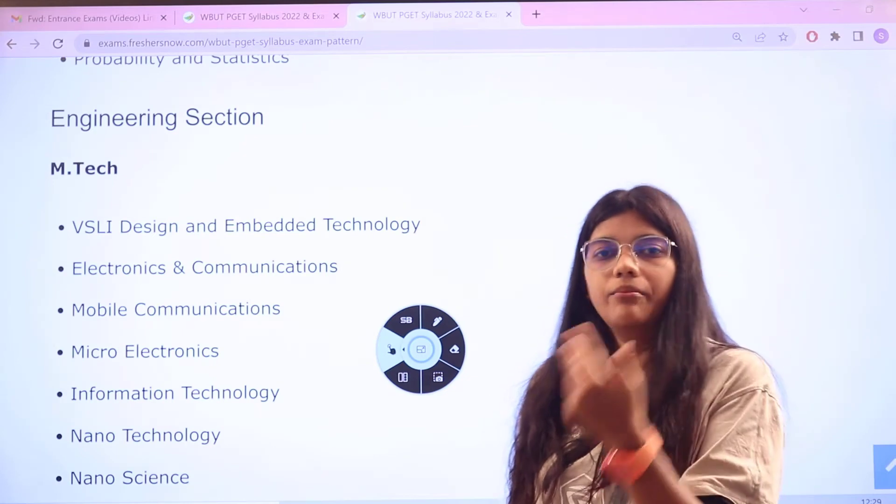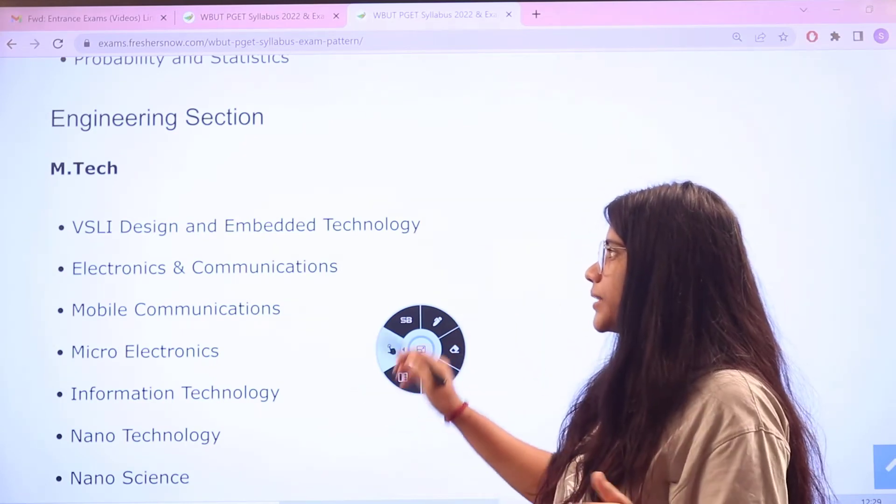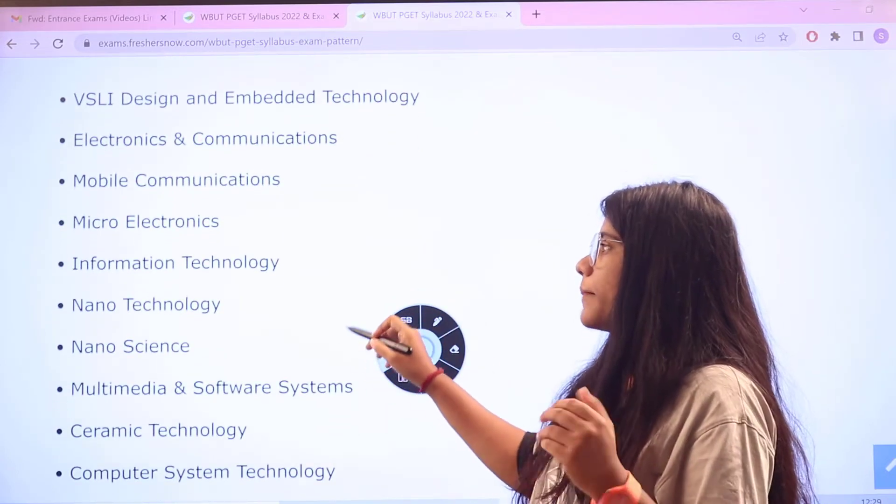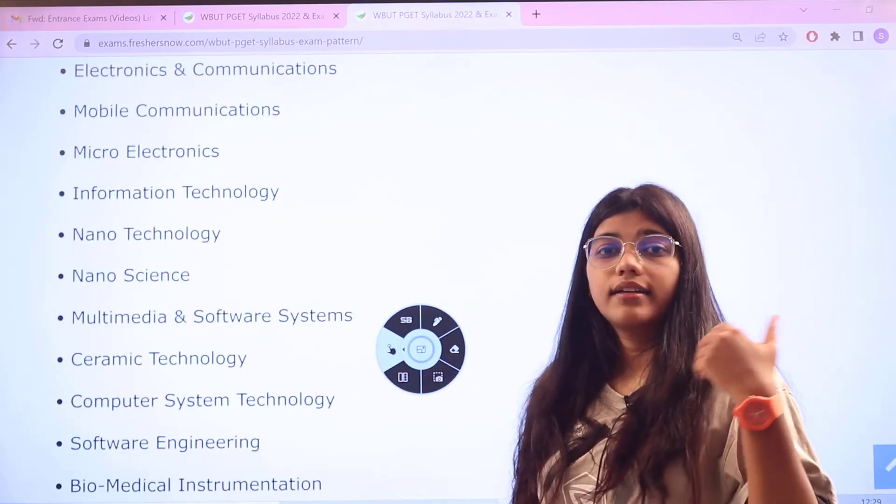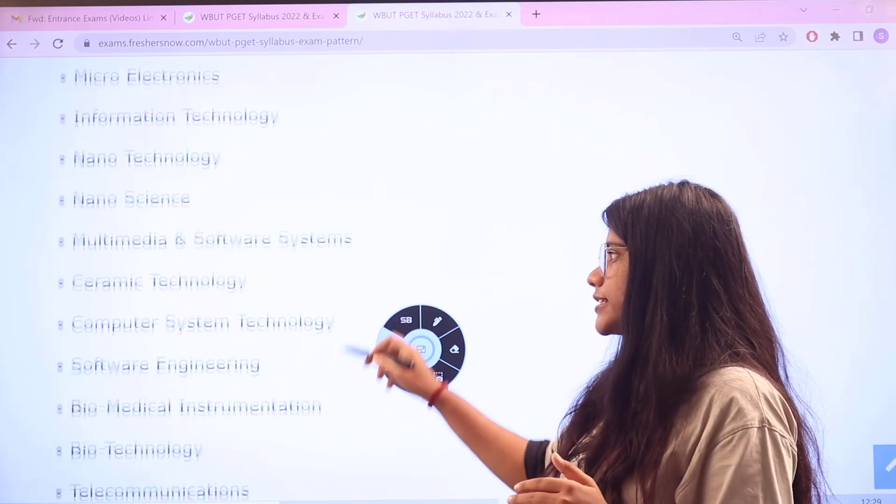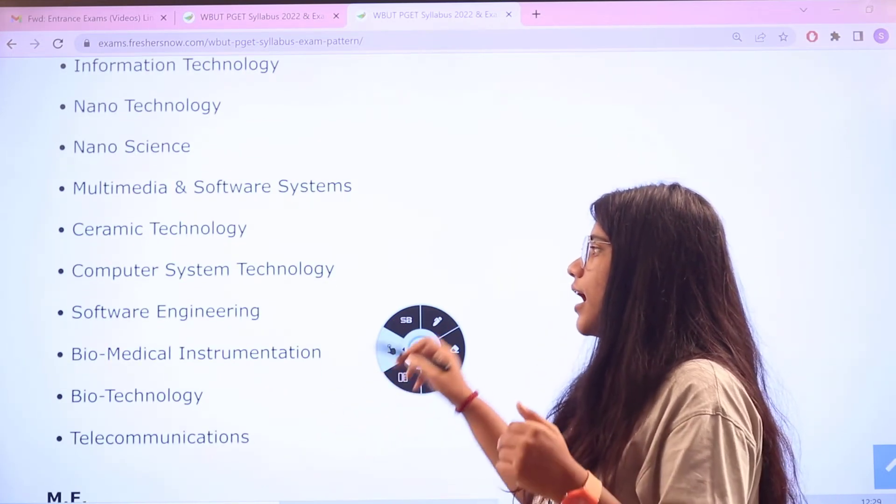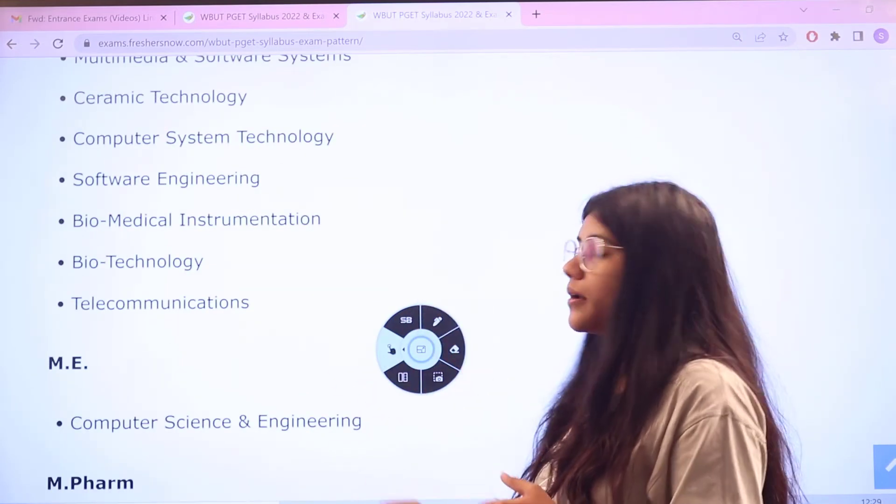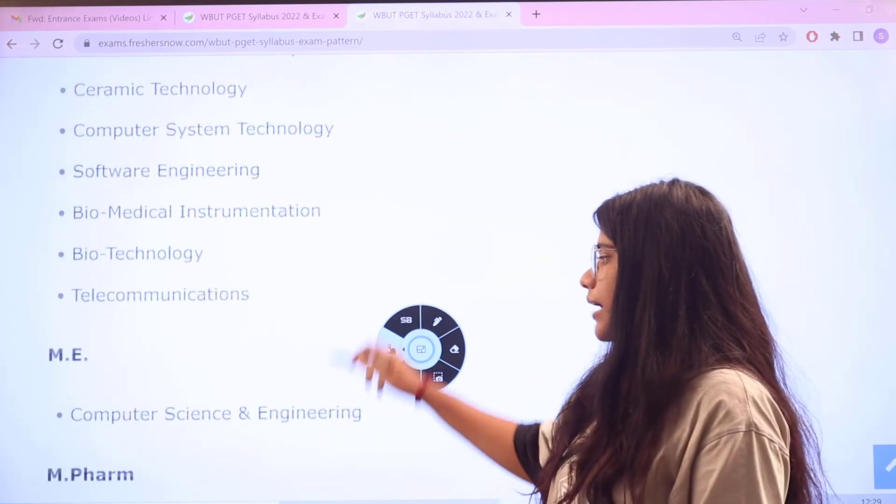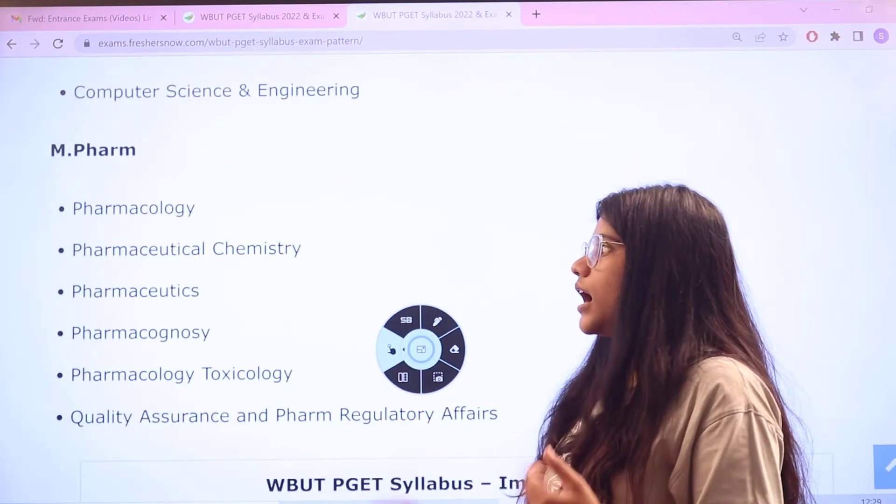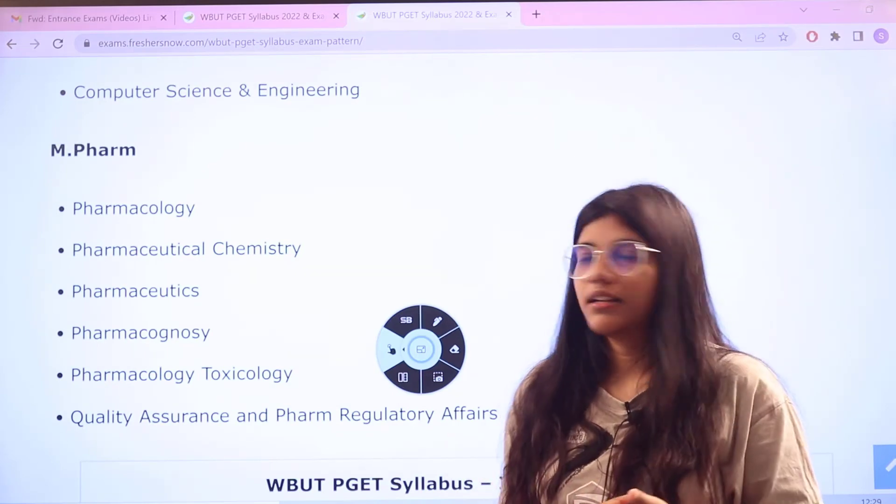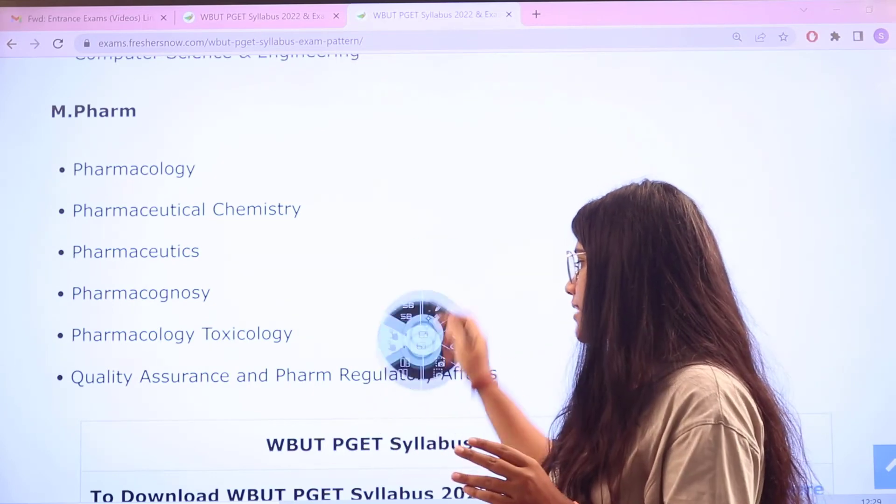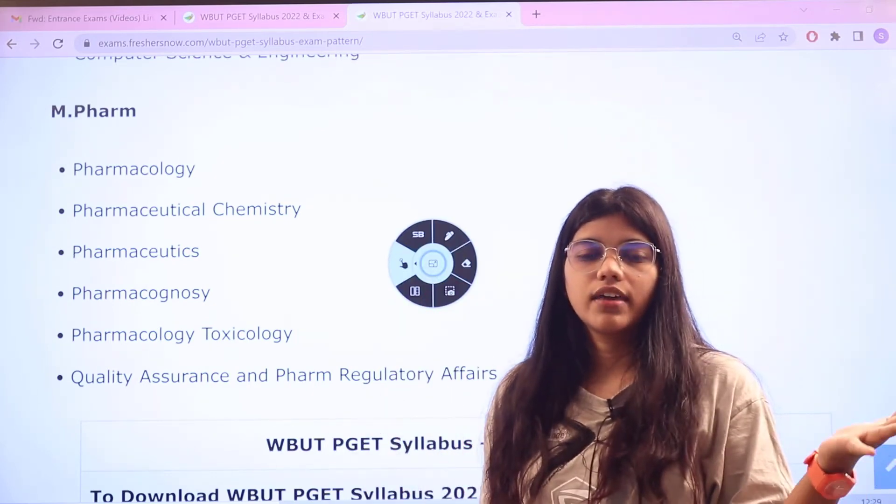For engineering section, it is divided into the majors that you are going to choose. So MTech, starting with MTech, you have VLSI designs and embedded technology, electronics and communications, microelectronics, information and technology, nanoscience and technology, multimedia and software systems, ceramic technology, then computer system technology, software engineering, biomedical instrumentation, biotechnology, and telecommunications. For ME, you have computer science and engineering. For MPharm, pharmacology, pharmaceutical chemistry and pharmaceutics, pharmacognosy, then you have quality assurance and pharma regulatory affairs, the evolutions which are being made in the pharmaceutical fields.